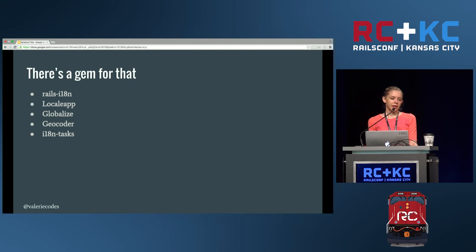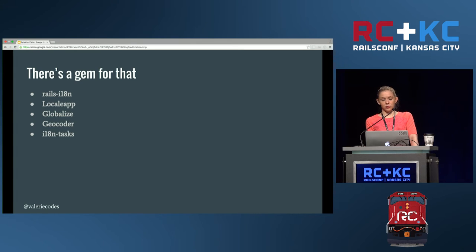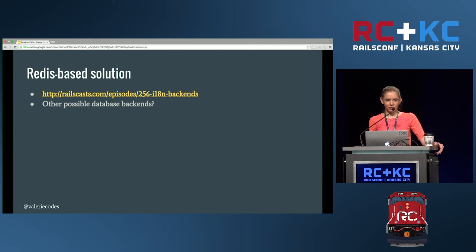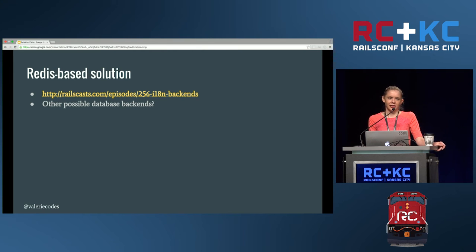i18n tasks is a gem that will go through and report keys in your YAML files that are missing or unused. It'll remove unused keys optionally, and it can also pre-fill missing keys from Google Translate if you want to play it fast and loose. One possible workaround for this YAML nightmare is proposed in a Railscast episode — it provides a framework for a Redis-based backend for the locale keys.